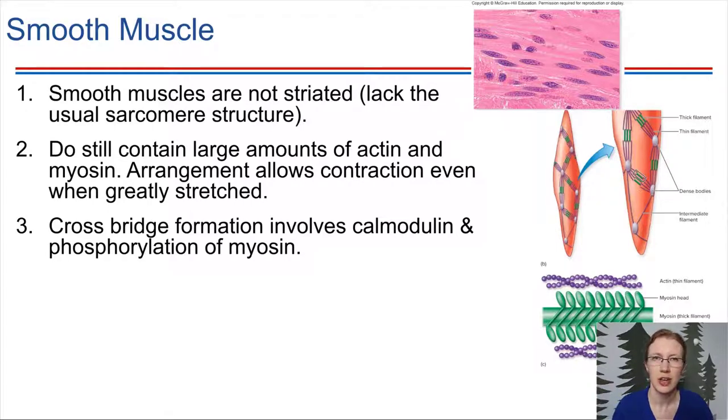Another example of where smooth muscle is located is in the uterus. So during contractions during childbirth, this needs to be a contraction that can be sustained. It needs to not be just a quick transient thing. It has to be sustained in order to push the baby out. So a different mechanism makes sense in terms of what's the purpose of smooth muscle.